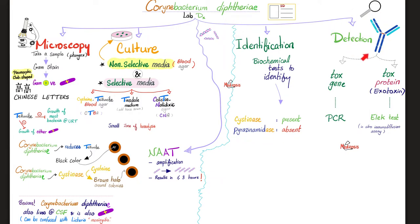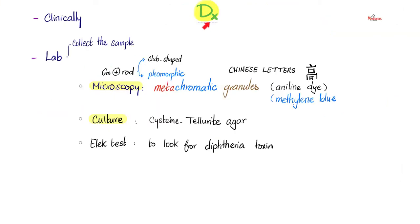For detection, you can detect the tox gene or the tox protein — i.e., the toxin. To detect the tox gene, use PCR. To detect the tox protein or exotoxin, use the ELEK test. As a clinical nugget: if you suspect Listeria meningitis and find a gram-positive rod in the CSF, do not jump to conclusions — it could be Listeria or Corynebacterium diphtheriae, since both are gram-positive rods.